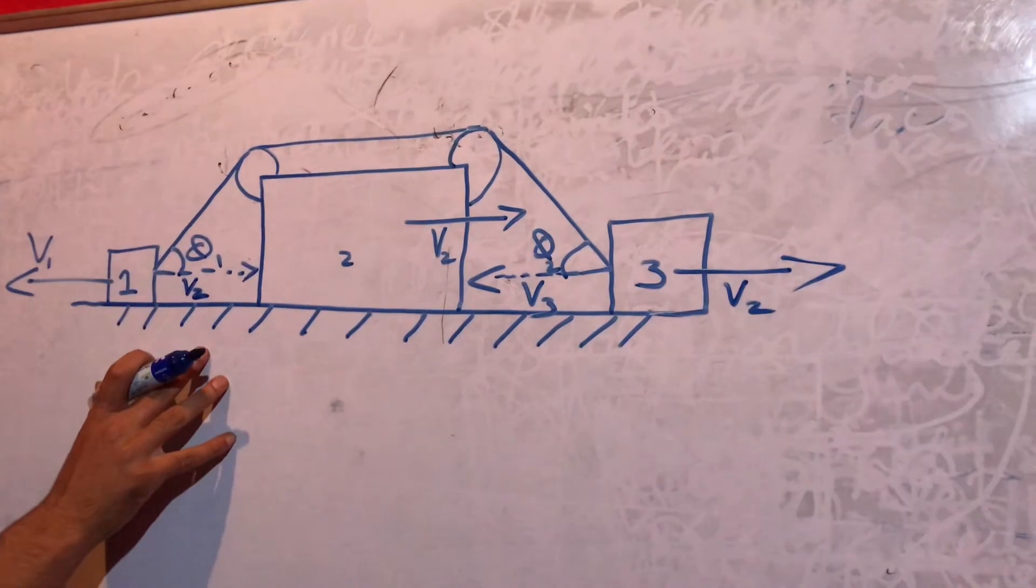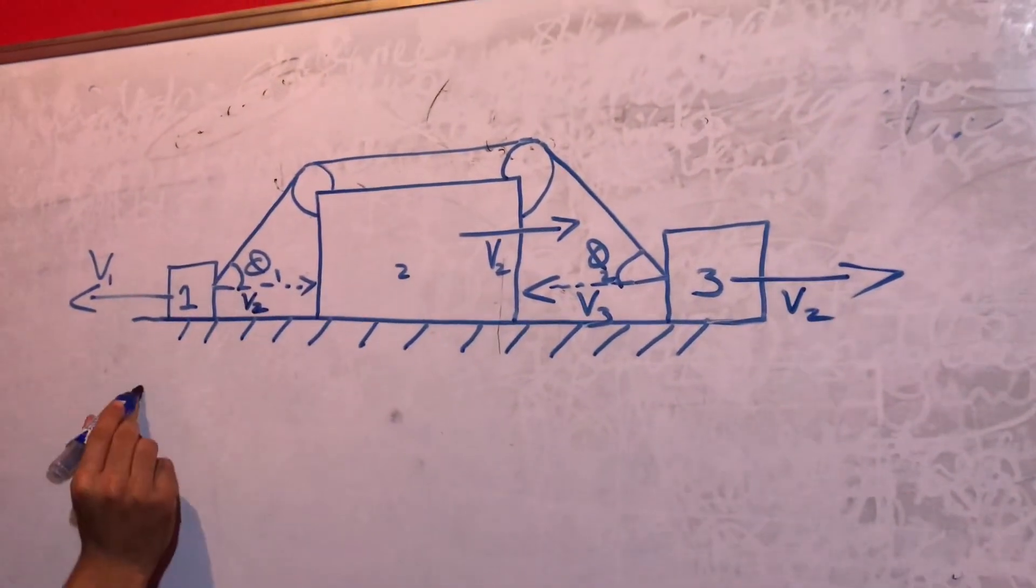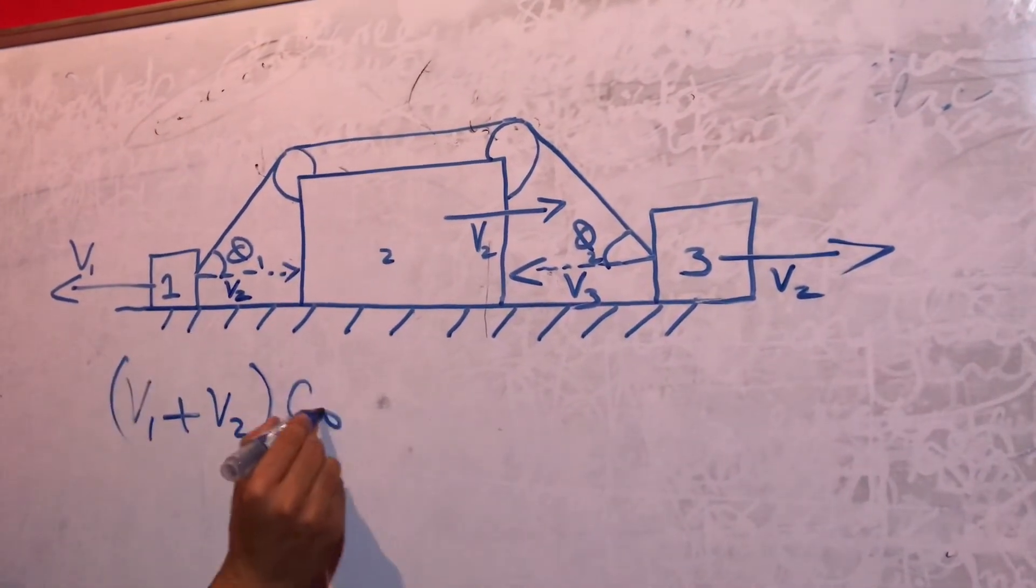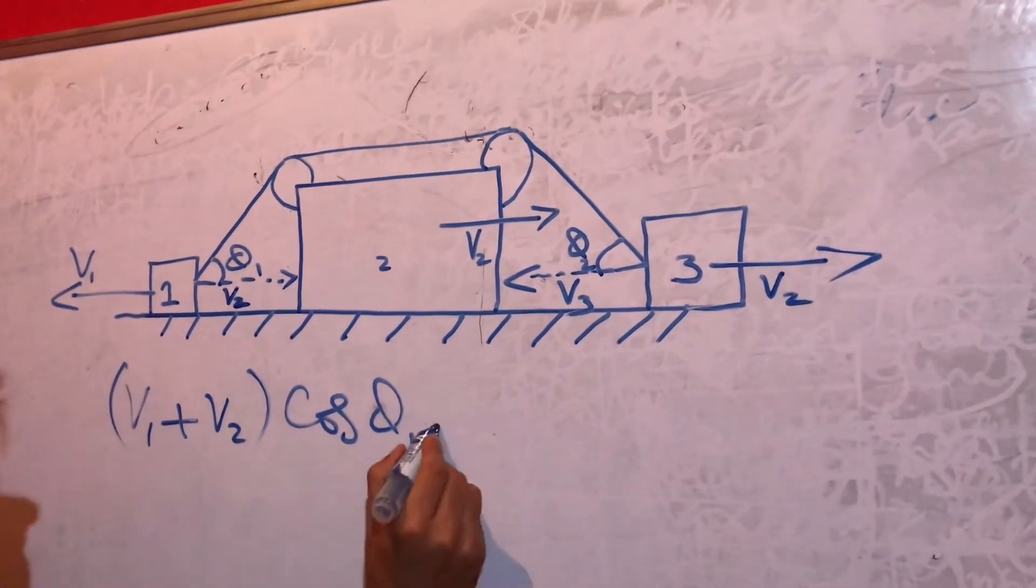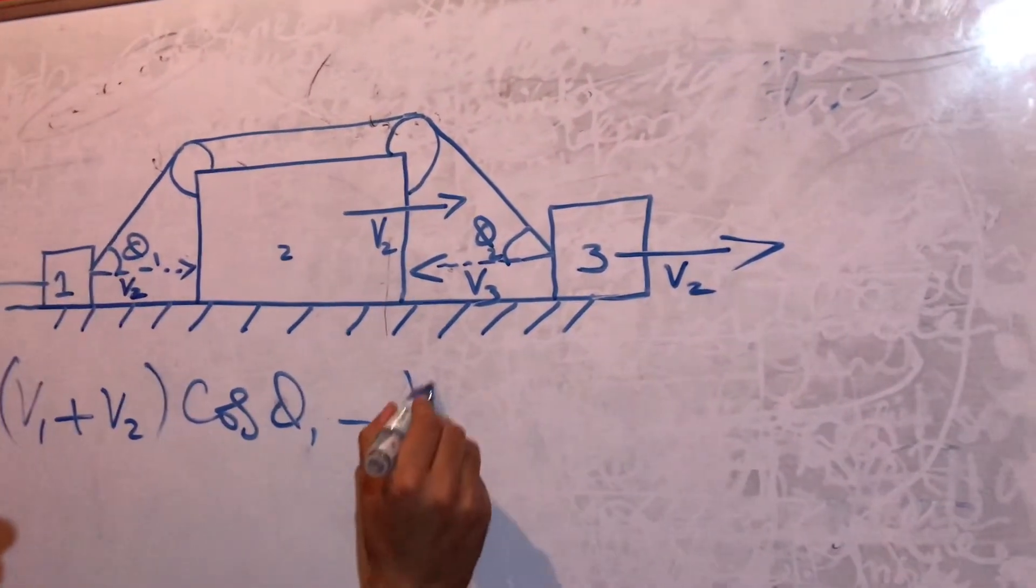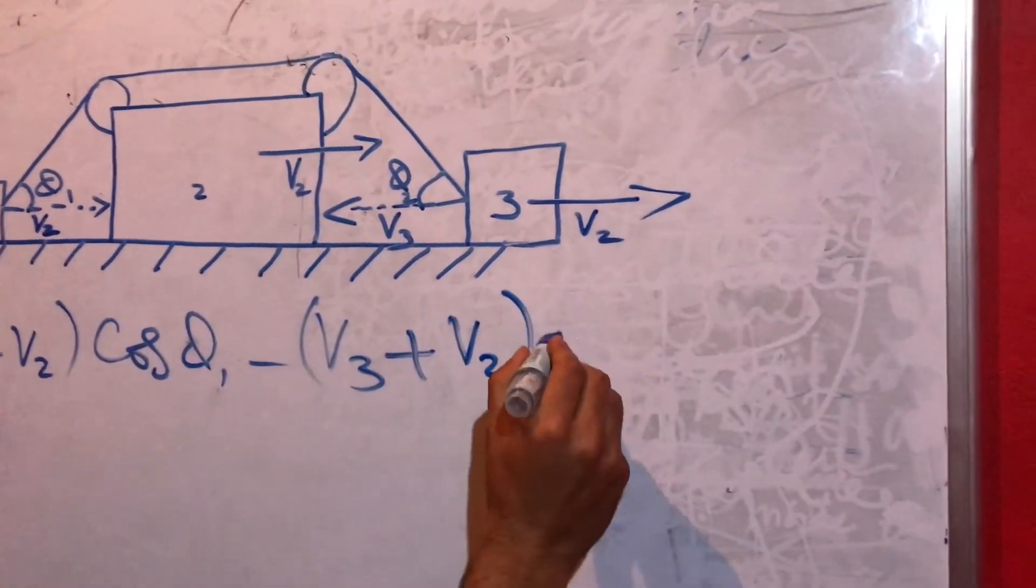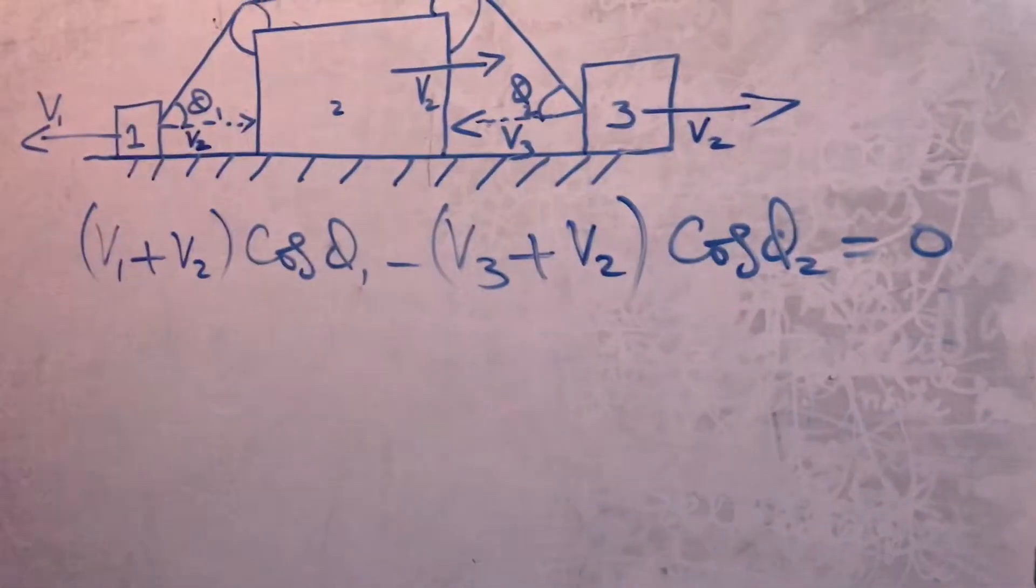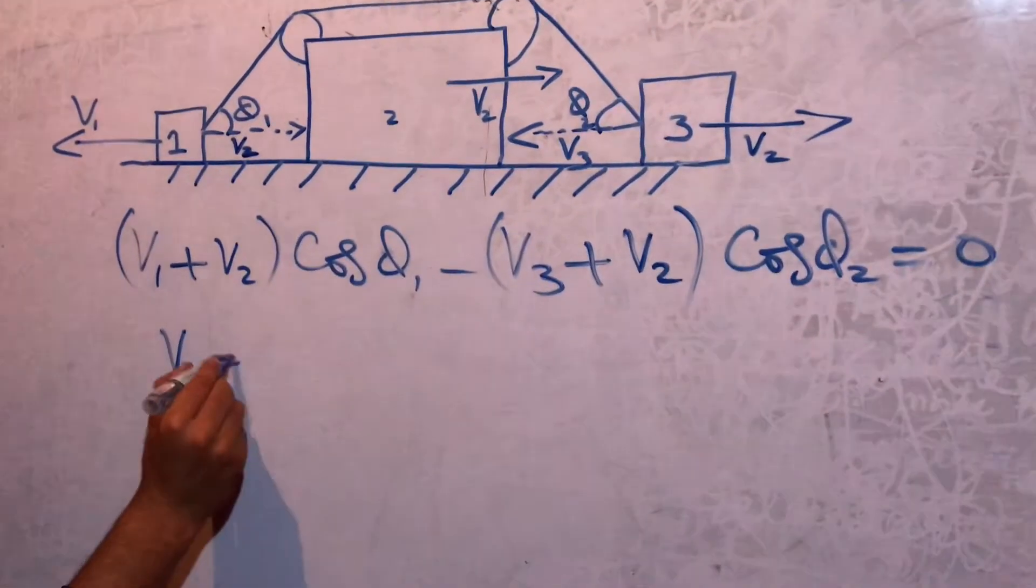Similarly, this v2 and v3 will also add up. So what I am going to write down is: (v1 + v2) cos theta 1 minus (v3 + v2) cos theta 2 equals to 0. That is the answer to this question.